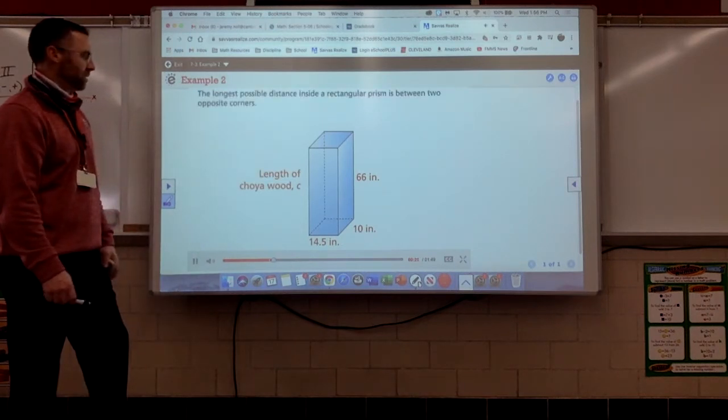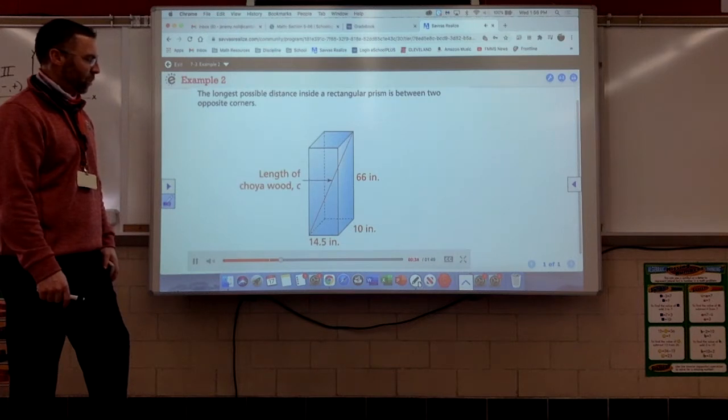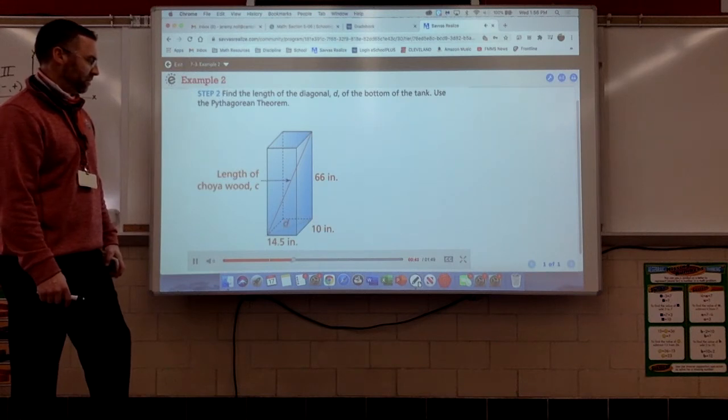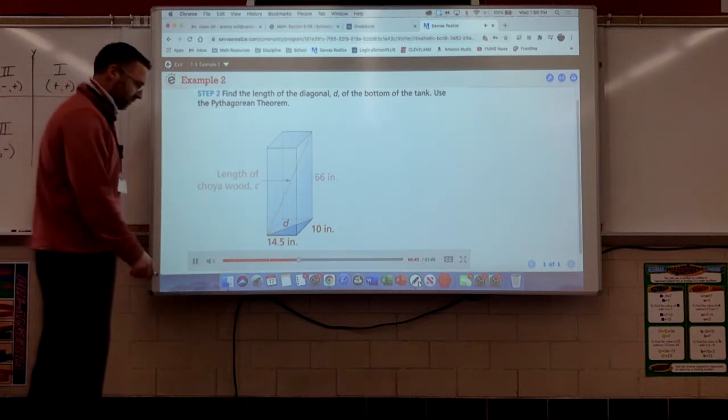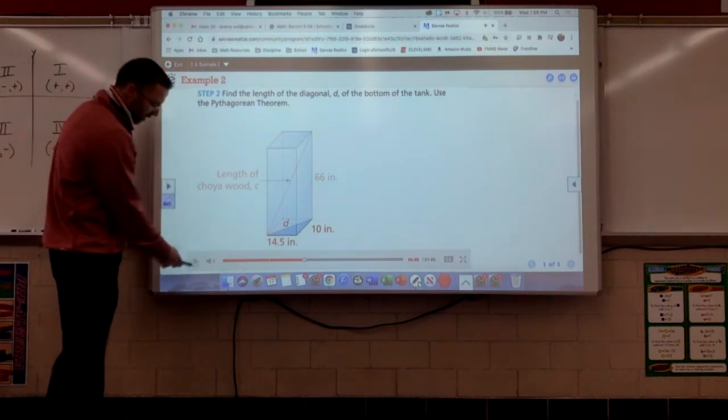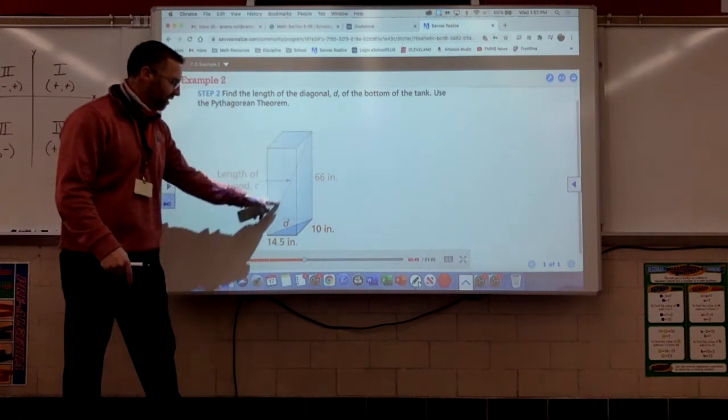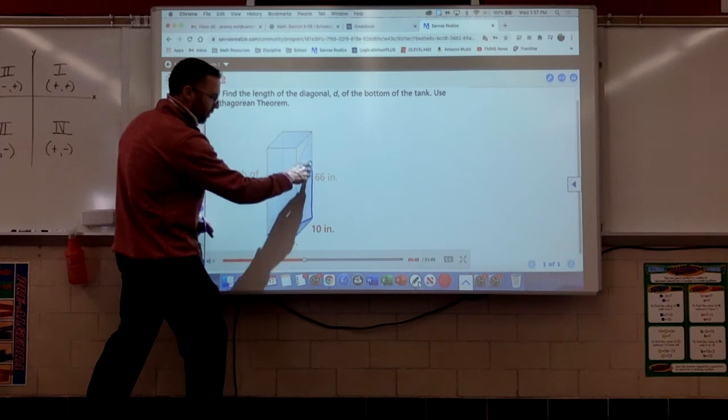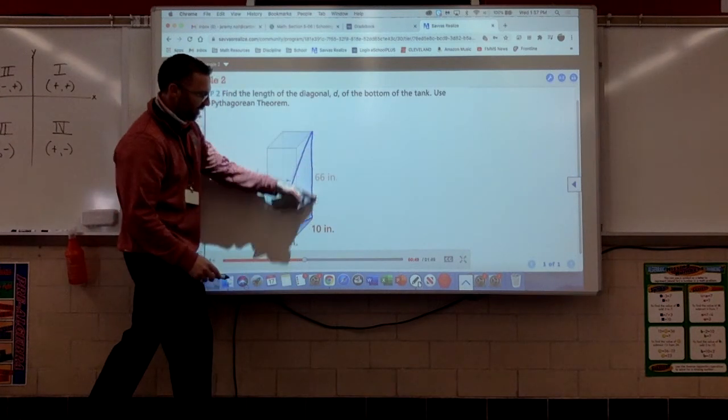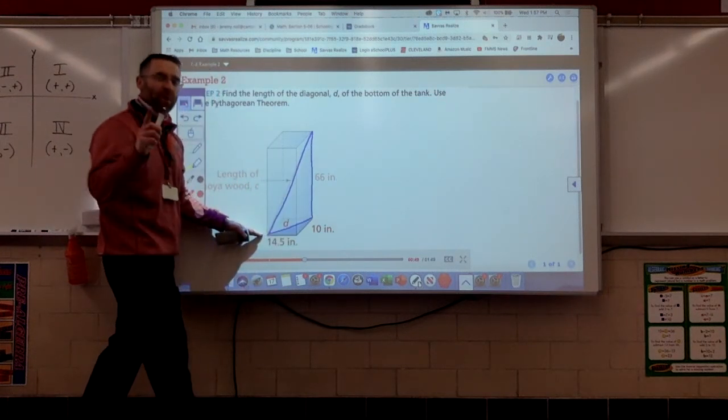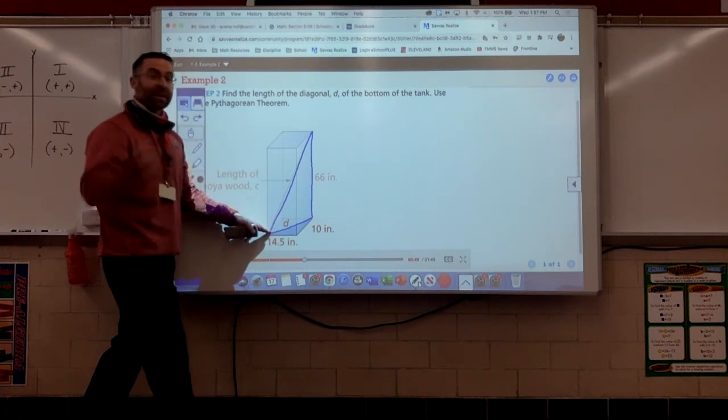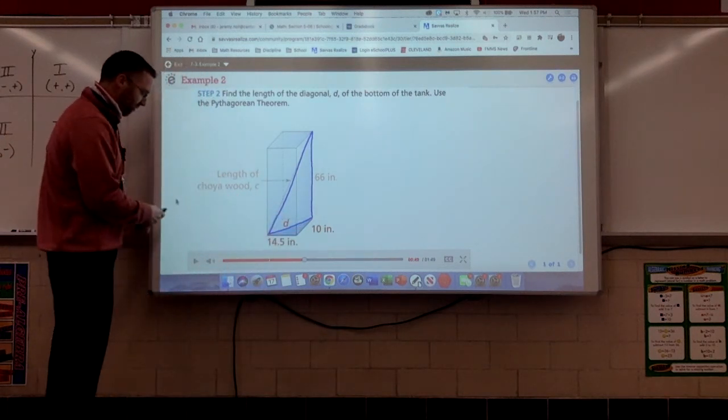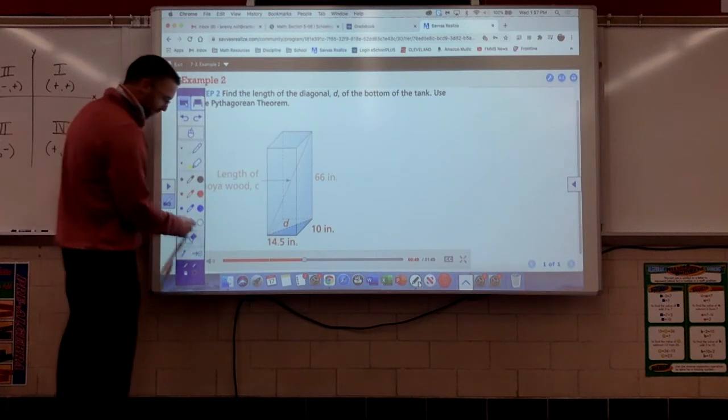The longest possible distance inside a rectangular prism is between two opposite corners. Just like I said. The next step is to find the length of the diagonal, D, of the bottom of the tank. The diagonal and adjacent two sides form a right triangle, so we can use the Pythagorean theorem. Now, remember, we have to find the length of this diagonal, because to find the length of this cholla wood, we know this leg is 66 inches. Do we know what this leg is? No. The reason why we have to find it is because this leg of the big triangle is actually the hypotenuse of the base of that figure. So, a little confusing, but don't worry. Mr. Frickey, he'll make it work. That's right. We'll make it better.